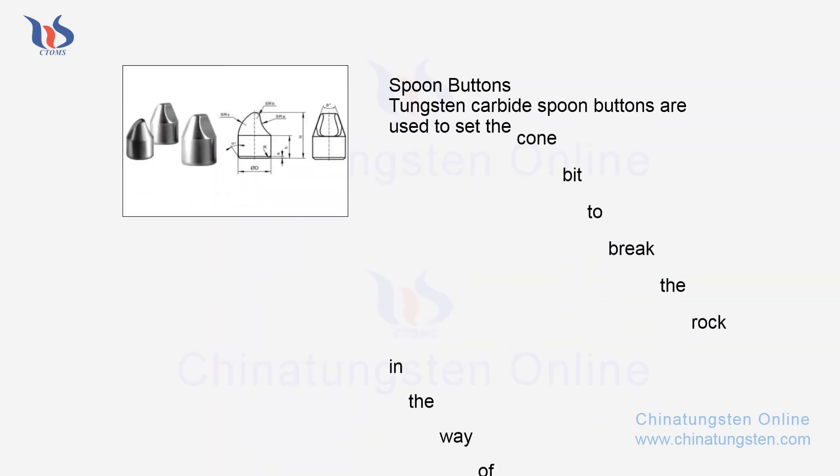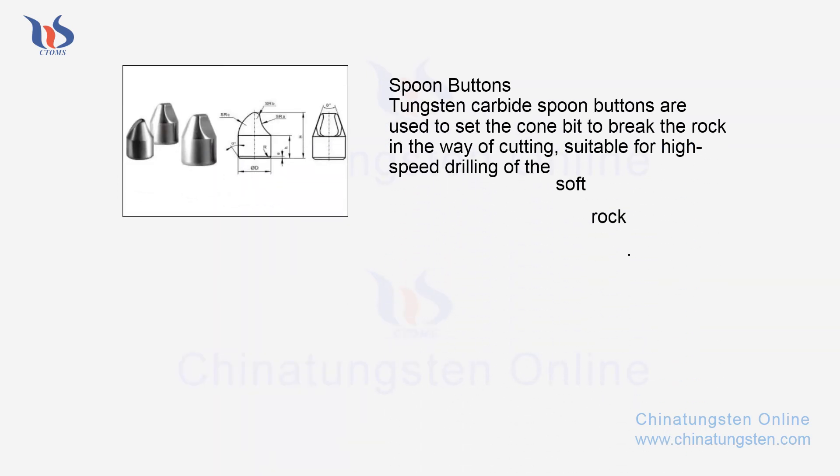Spoon buttons. Tungsten carbide spoon buttons are used to set the cone bit to break the rock in the way of cutting, suitable for high-speed drilling of soft rock.